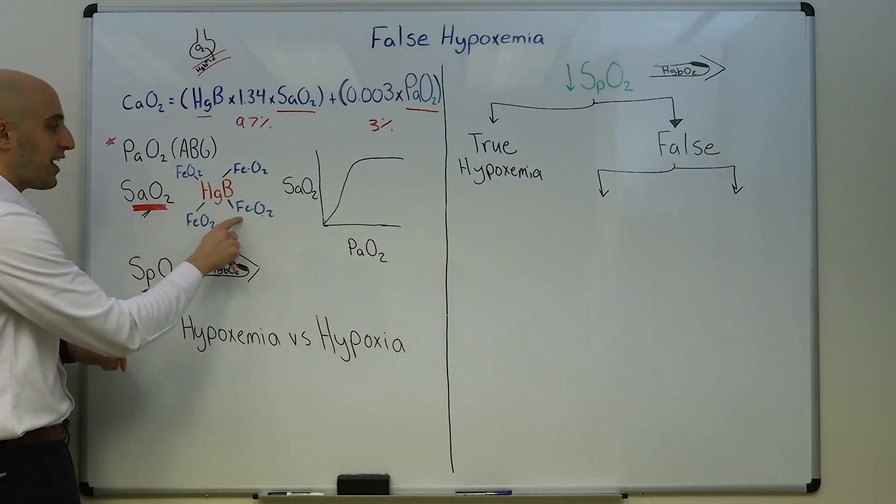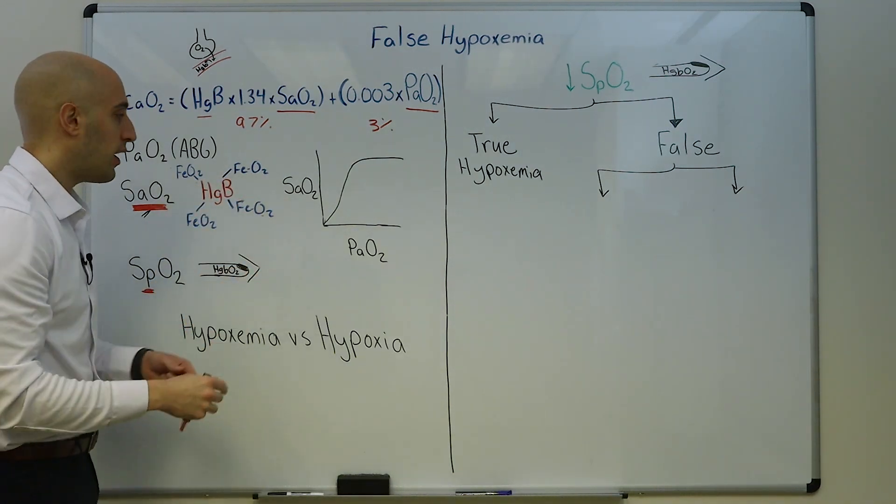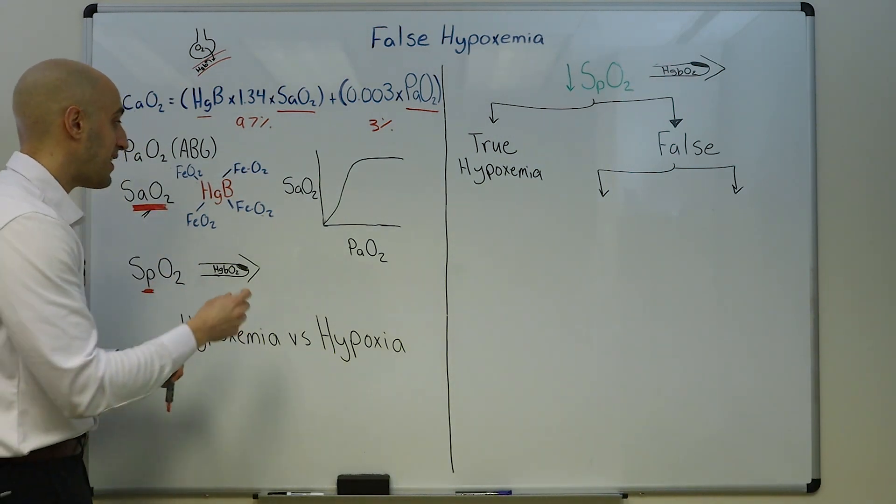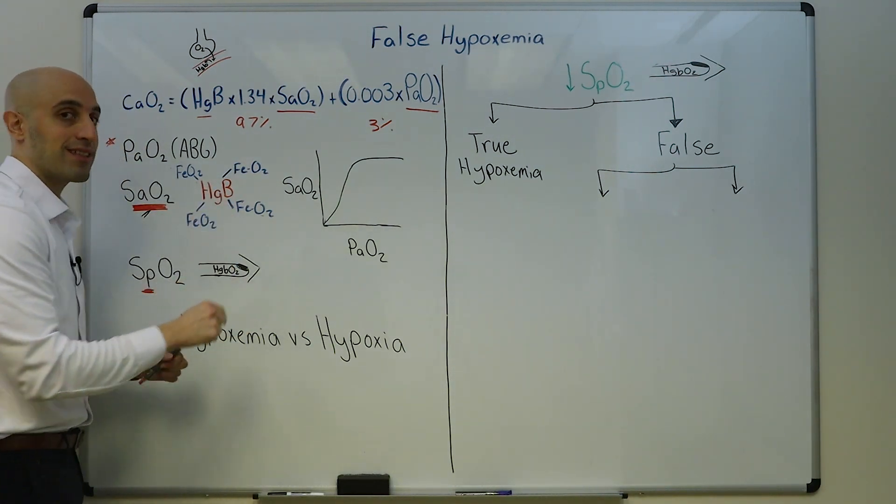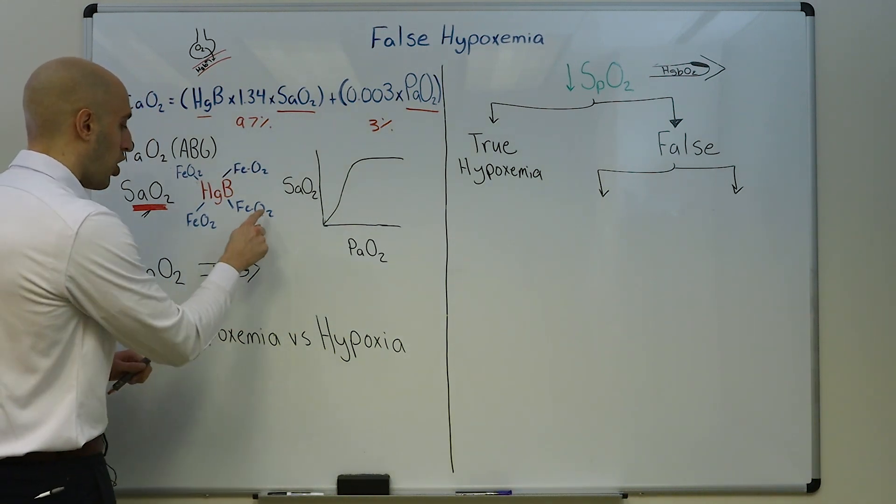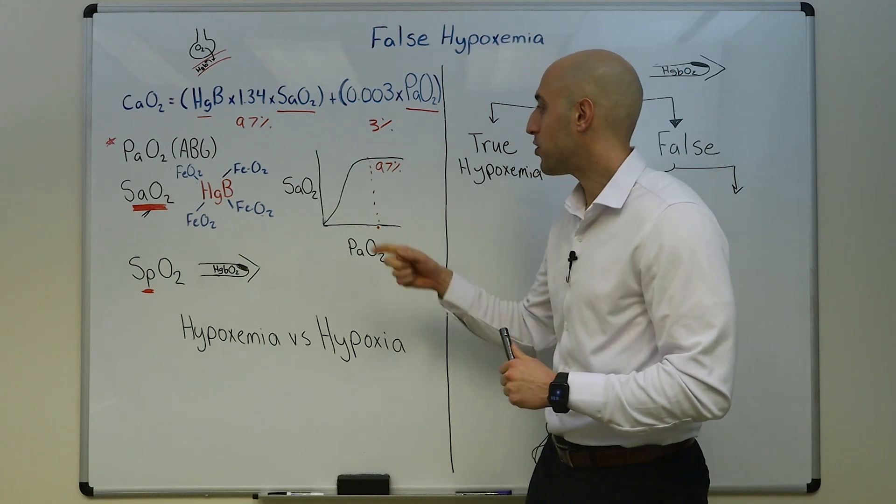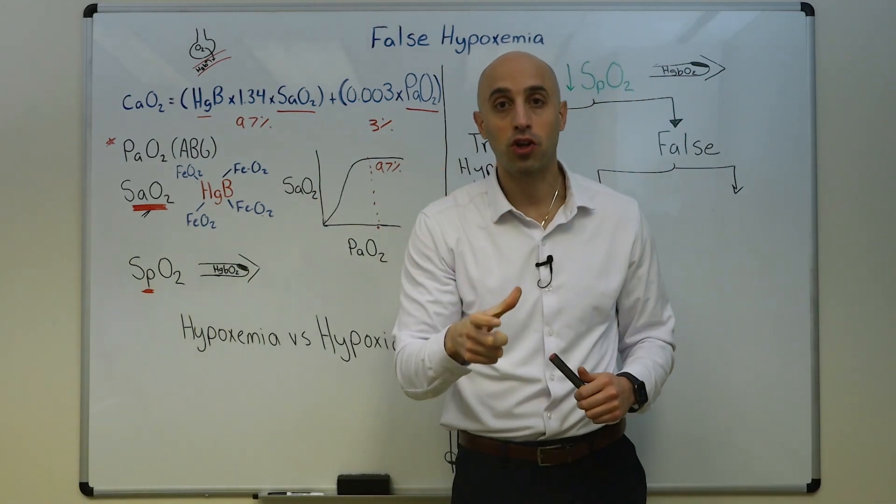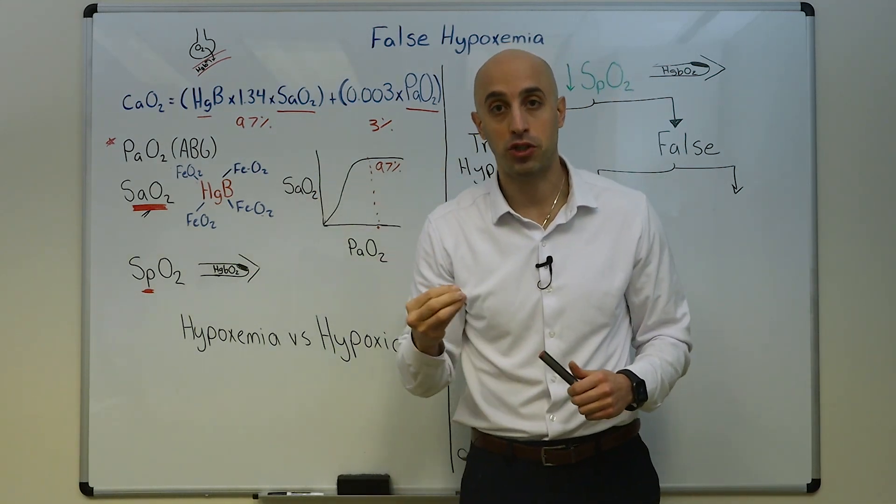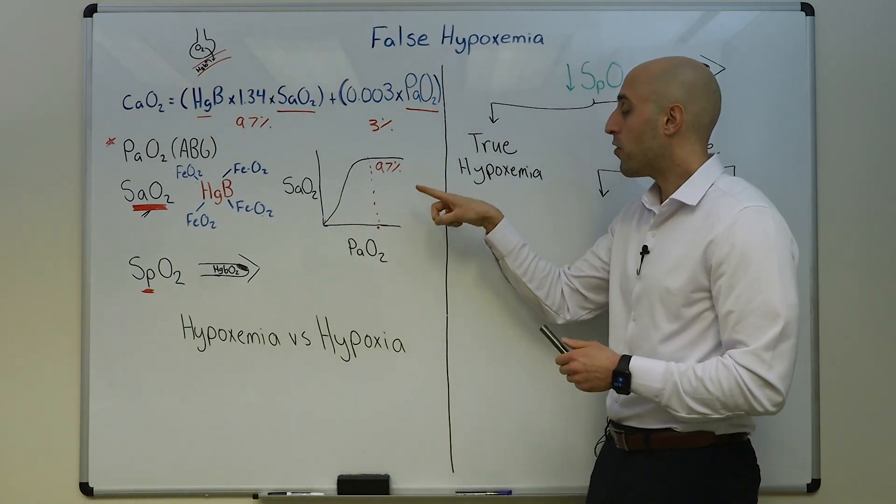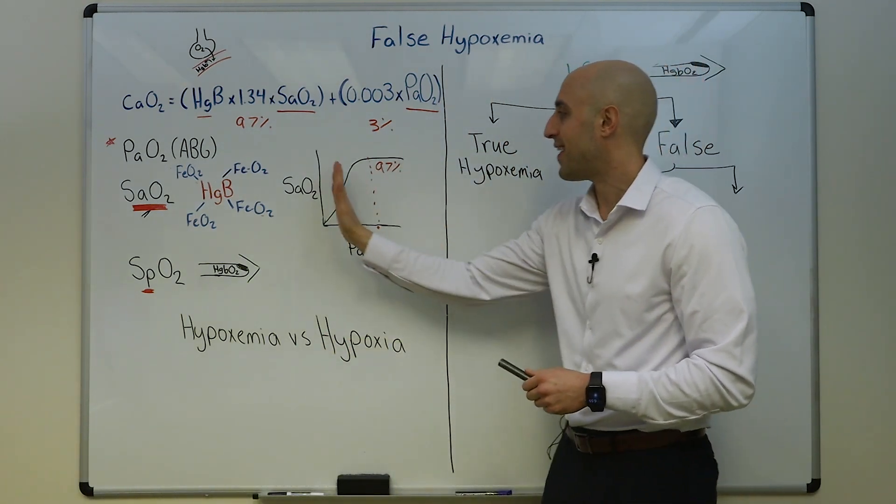So this is a measurement based on the pulse ox. You're not actually sampling the blood. The SaO2, you actually sample the blood to determine the percent oxygen saturation of the hemoglobin molecule. As a reminder, hemoglobin is a protein, it's in red blood cells, it has four iron molecules, each of these iron can bind an oxygen molecule.